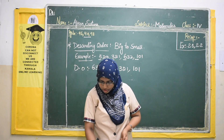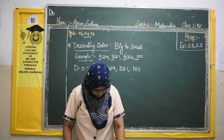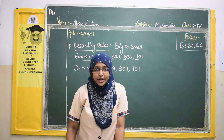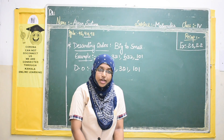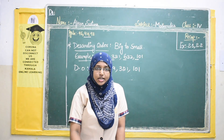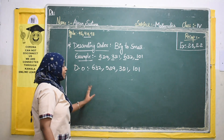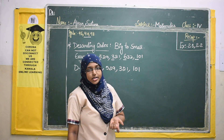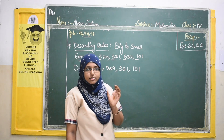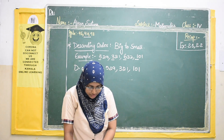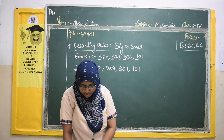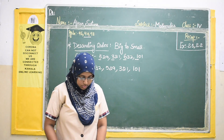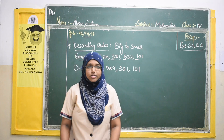I request all students to read pages 96, 97, and 98 once. You can also try these concepts with your own examples — writing successors and predecessors, comparing numbers, and writing numbers in ascending and descending order. I hope everyone will try it with some examples of their own. I think it is very clear, students. Thank you.